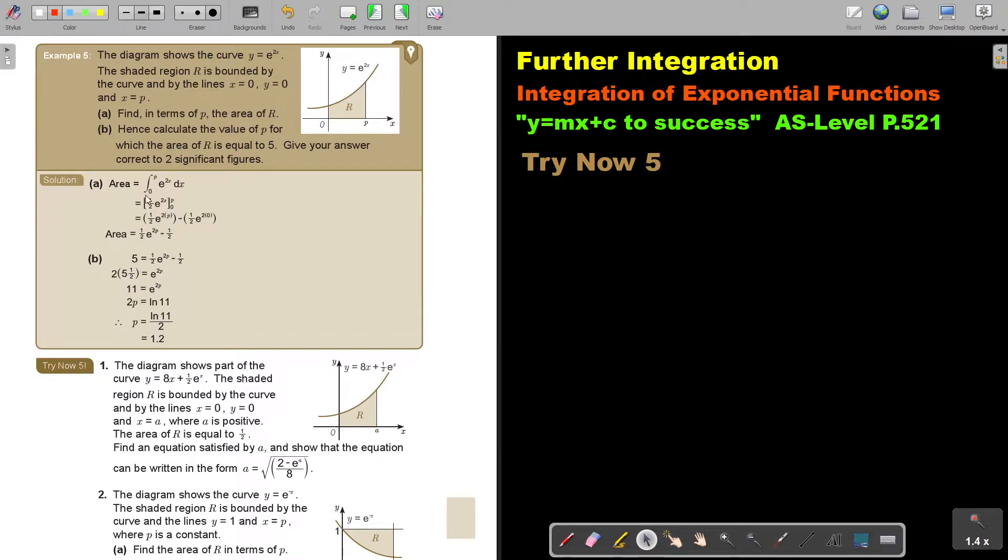To find area, I integrate this equation. Basically, I'm just going to say half e to the 2x, and it's p and 0. And then I substitute p and I substitute 0, and this is going to be the area.